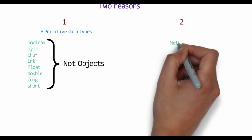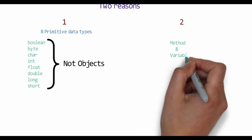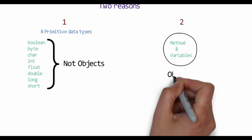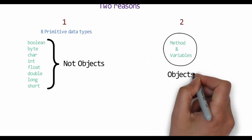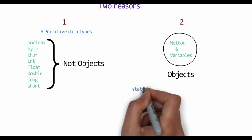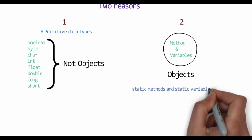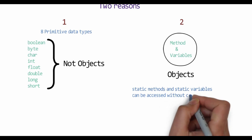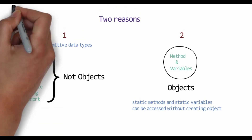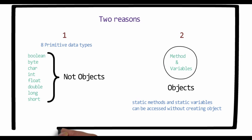The second reason is that in an object-oriented language, all methods and variables should be accessed through an object. But Java has static methods and static variables which we can call without creating any object. Due to these reasons, Java is not a purely object-oriented language.